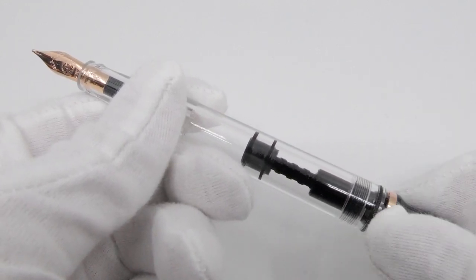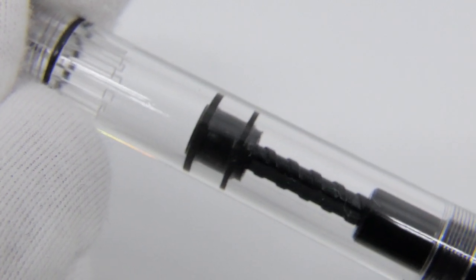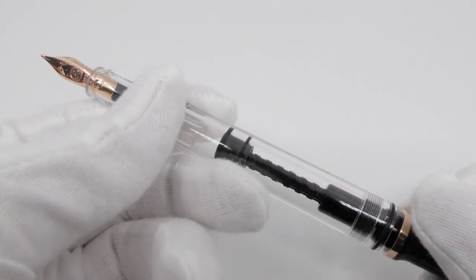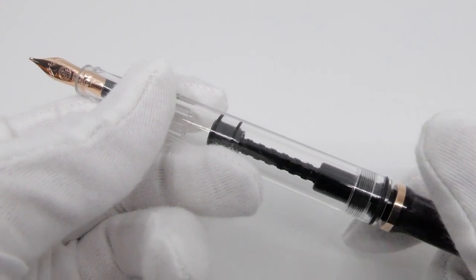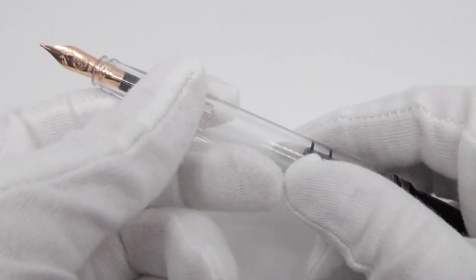Through the clear barrel, you can perfectly see the piston mechanism and the ink chamber, which holds 2.5 milliliters of ink, more than three times the amount of a standard international ink cartridge of only 0.9 milliliters.